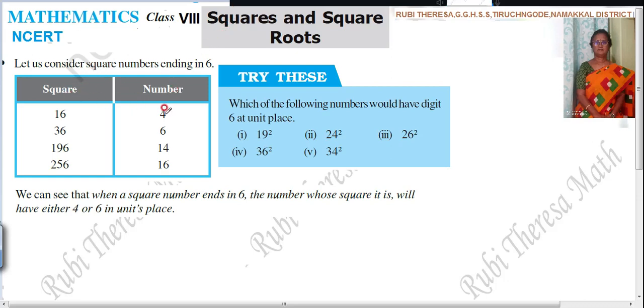Number 4. 4 square is 16. This is nothing but 4 square. This is 6 square. 6 square is 36. This is 14 square. This is 16 square.